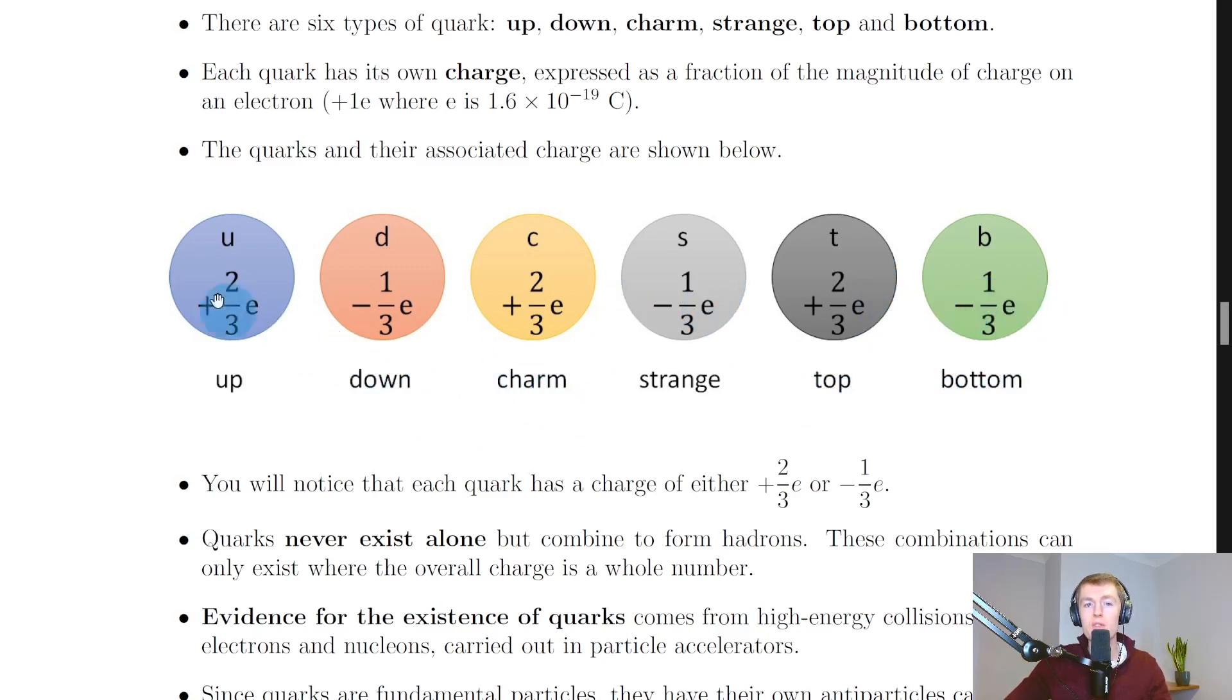To remember these charges, it's useful to remember the quarks in pairs: up and down, charm and strange, top and bottom. The first one in each pair (like up, charm, and top) has a charge of plus two-thirds e, whereas the other ones (down, strange, and bottom) have a charge of minus one-third e.